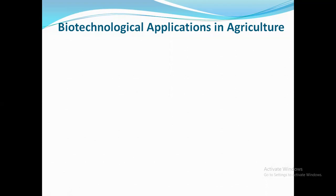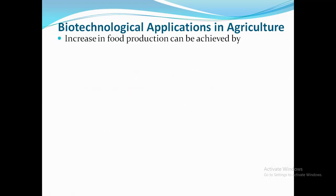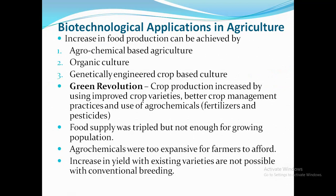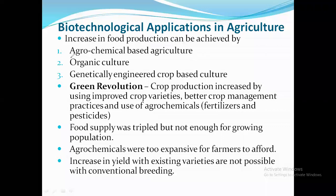First we will discuss biotechnology applications in agriculture. In agricultural development, biotechnology has played a big role in the last 30-40 years, and it has literally improved the crop varieties. Let us see how the application of biotechnology in agriculture has helped us to have better crop cultivation. There are three kinds of methods of agricultural development. The first method is called agrochemical-based agriculture.